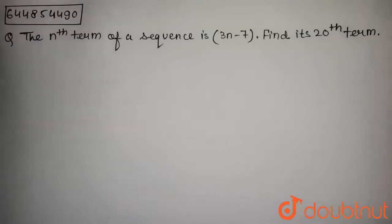The question is: the nth term of a sequence is 3n-7. Find its 20th term.